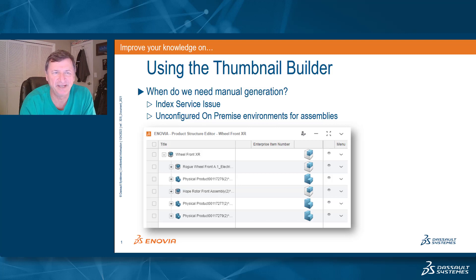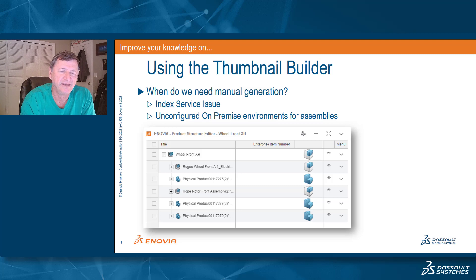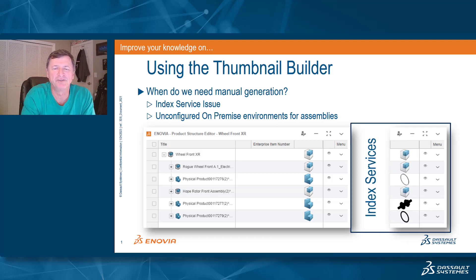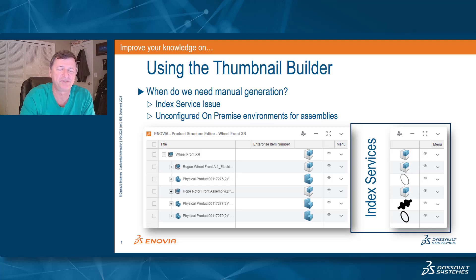Sometimes you'll notice some thumbnails are missing. These could be due to an index service issue on your environment that didn't process a particular assembly, or on an unconfigured on-premise environment. In the case of on-premise environments, there are some specific configurations you have to make to get your index services to produce the product 2D thumbnails as opposed to just the parts. You can set up the environment with a little customization to produce your products as thumbnails as well, but if you don't and you want a quick ad hoc way to generate them, that's what I'm touching on today.